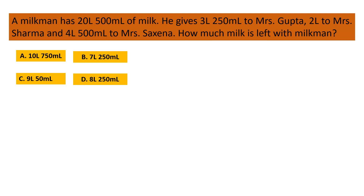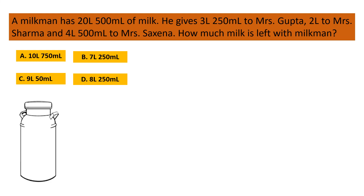A milkman has 20 liter 500 milliliter of milk. He gives 3 liter 250 milliliter to Mrs. Gupta, 2 liter to Mrs. Sharma, and 4 liter 500 milliliter to Mrs. Saksena. How much milk is left with the milkman? Option A: 10 liter 750 milliliter, Option B: 7 liter 250 milliliter, Option C: 9 liter 50 milliliter, and Option D: 8 liter 250 milliliter.